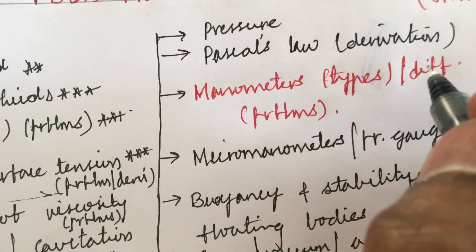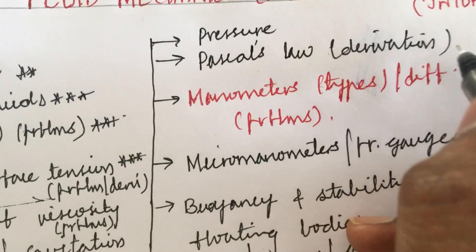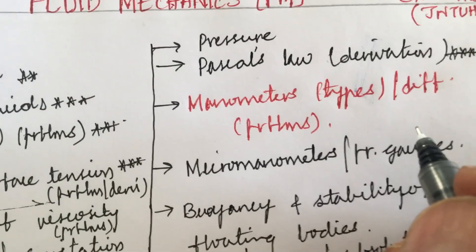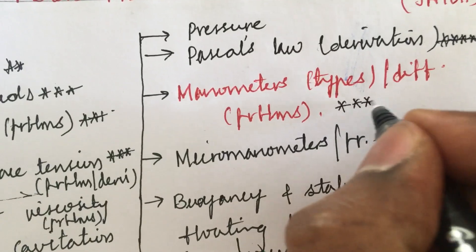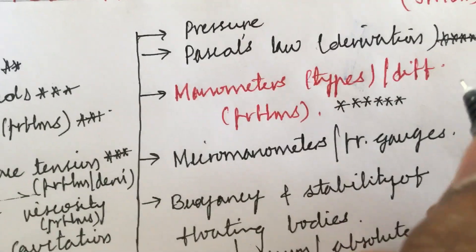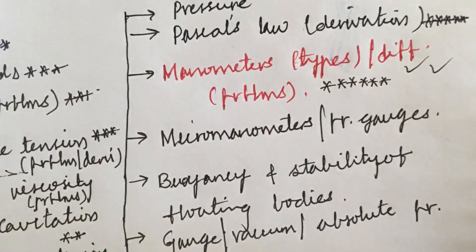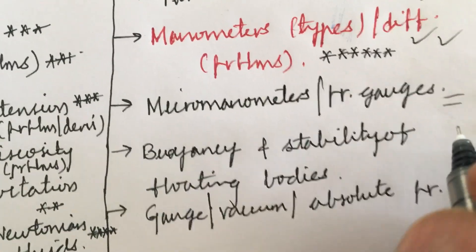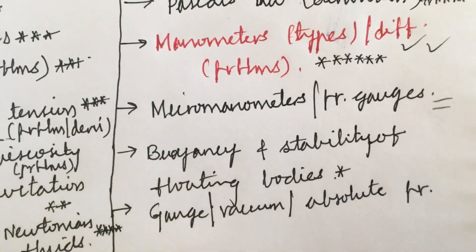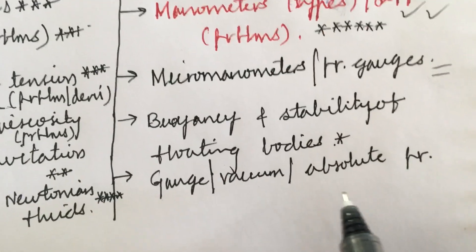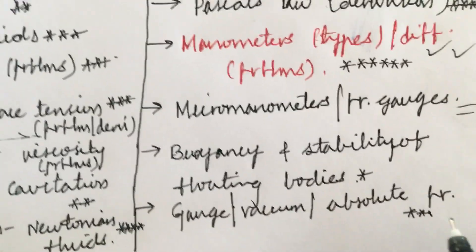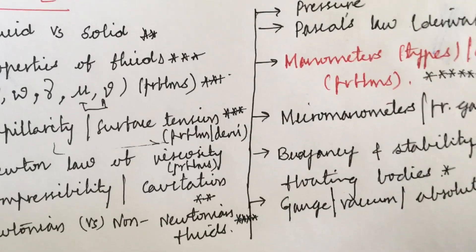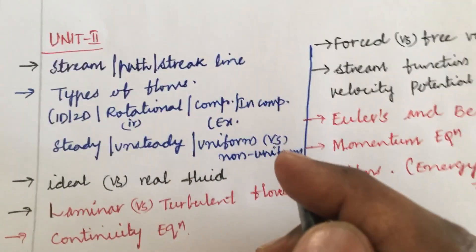Define pressure, its units, and the problems related to it. Pascal's law and its derivation is a topmost question worth 5 marks. Different types of manometers is a very important gunshot question — the types, differences, and problems; any one type of manometer and its differences will definitely be asked. Micromanometers and pressure gauges are short questions. Stability of floating bodies, gauge pressure, vacuum pressure, and absolute pressure along with diagrams are topmost questions — do not skip any part.